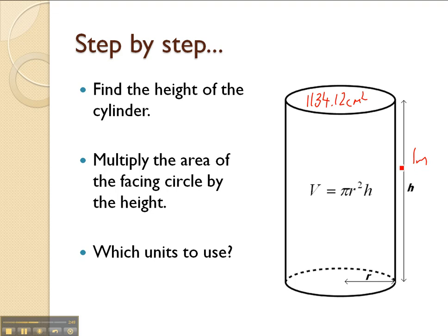To find the volume, we'd need to look at this. The volume is equal to pi r squared. Well, there's pi r squared, 1134.12, multiplied by the height. It's important to note the height in this case is 1 metre, so it would be 100 centimetres.